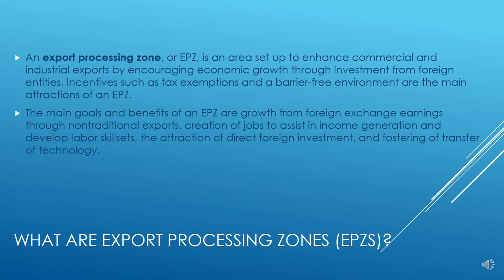The second type within special economic zones is export processing zones. An export processing zone (EPZ) is an area set up to enhance commercial and industrial exports by encouraging economic growth through investment from foreign entities. Incentives such as tax exemptions and a barrier-free environment are the main attractions. The main goals of EPZs are growth from foreign exchange earnings through non-traditional exports, creation of jobs to assist in income generation and develop labor skill sets, and the attraction of direct foreign investment and fostering of technology transfer.